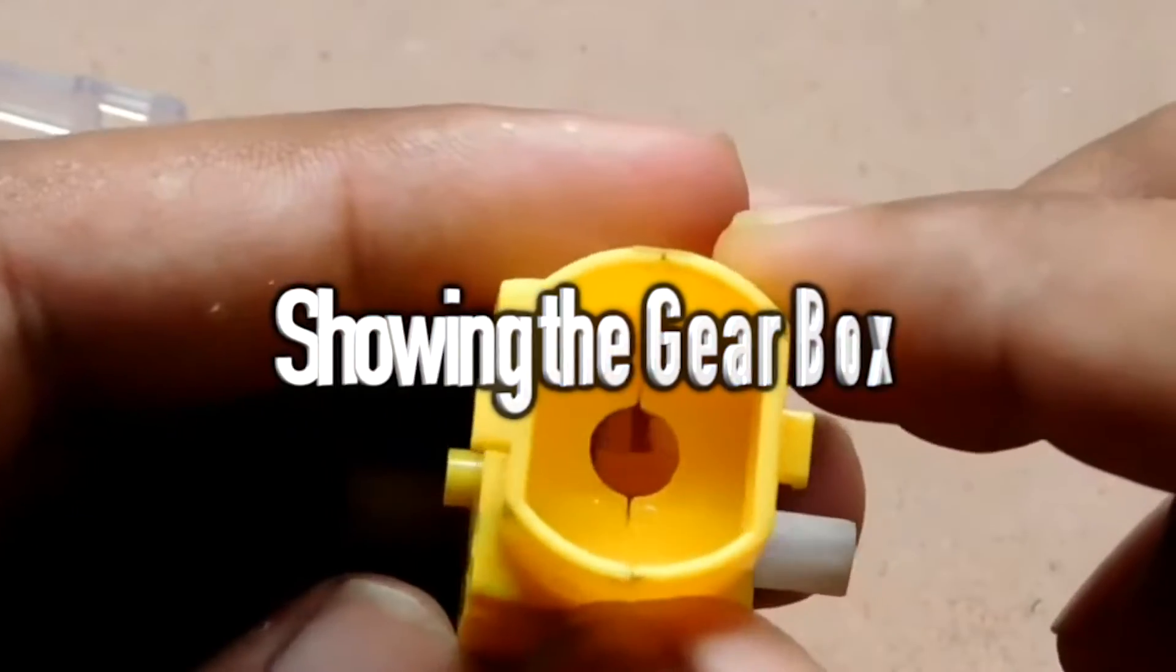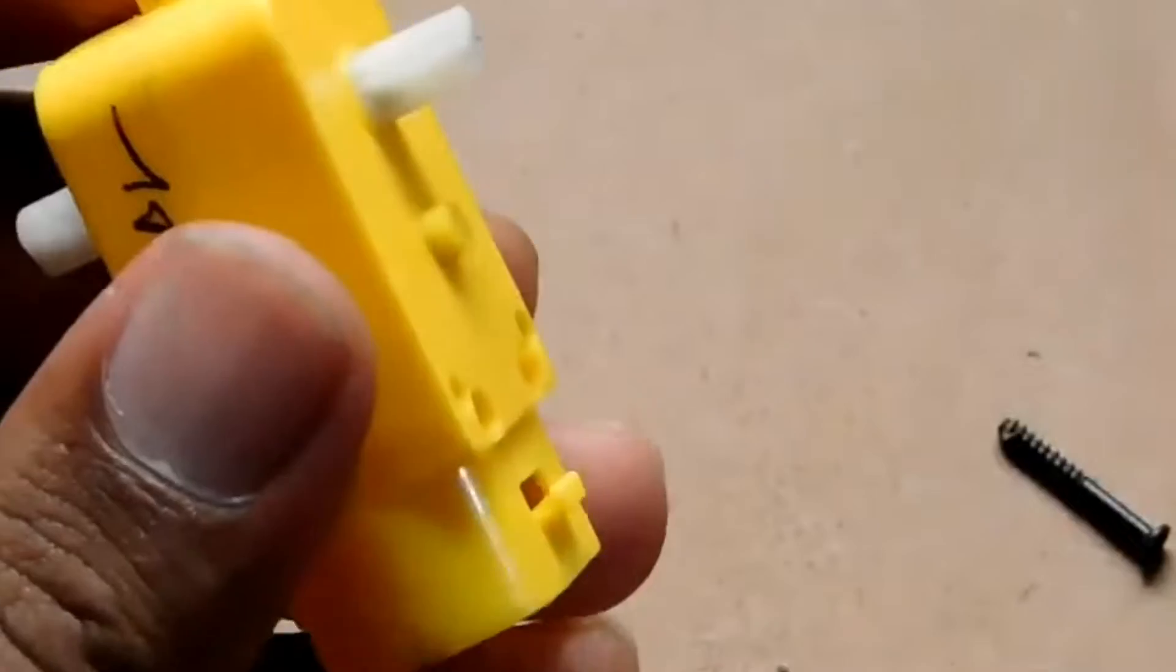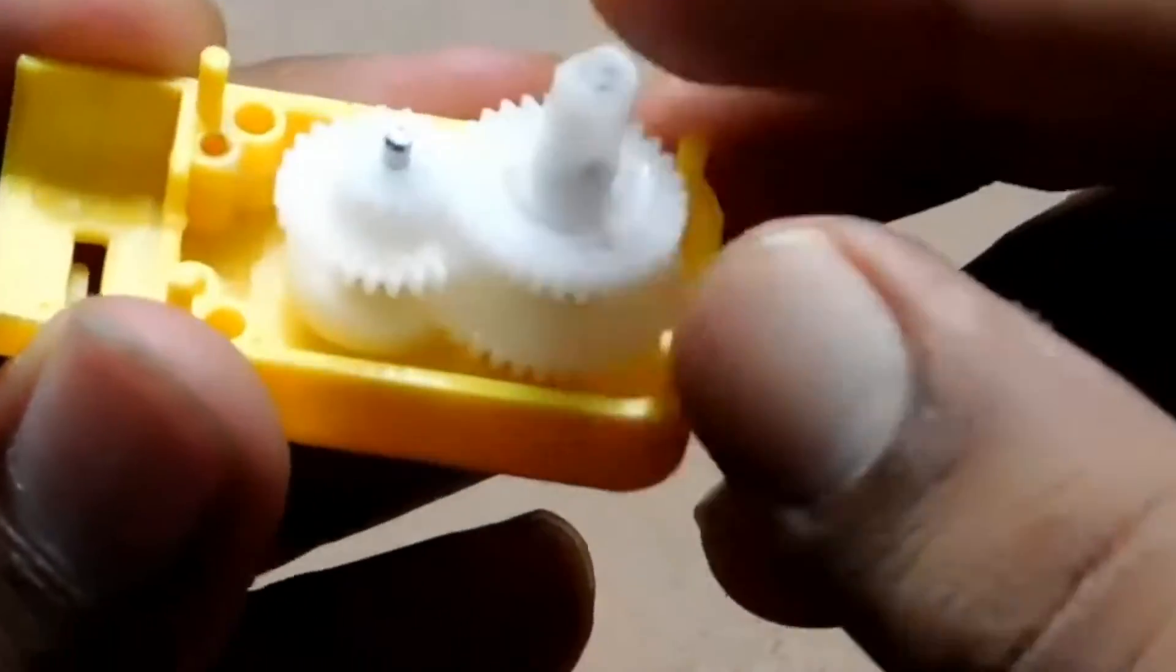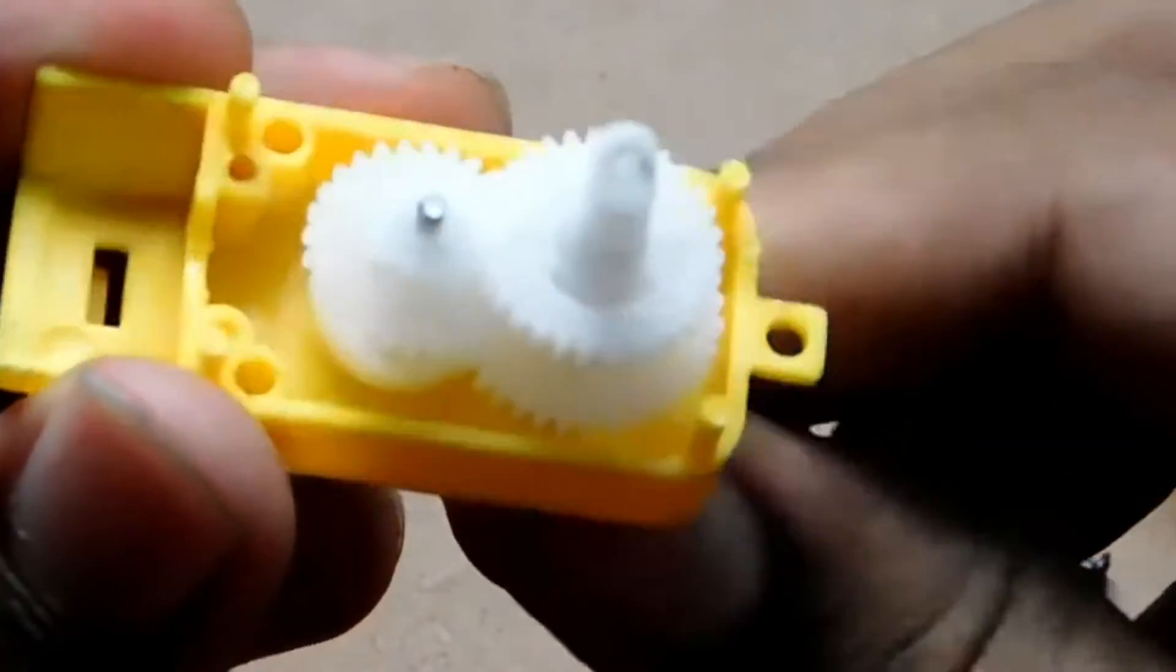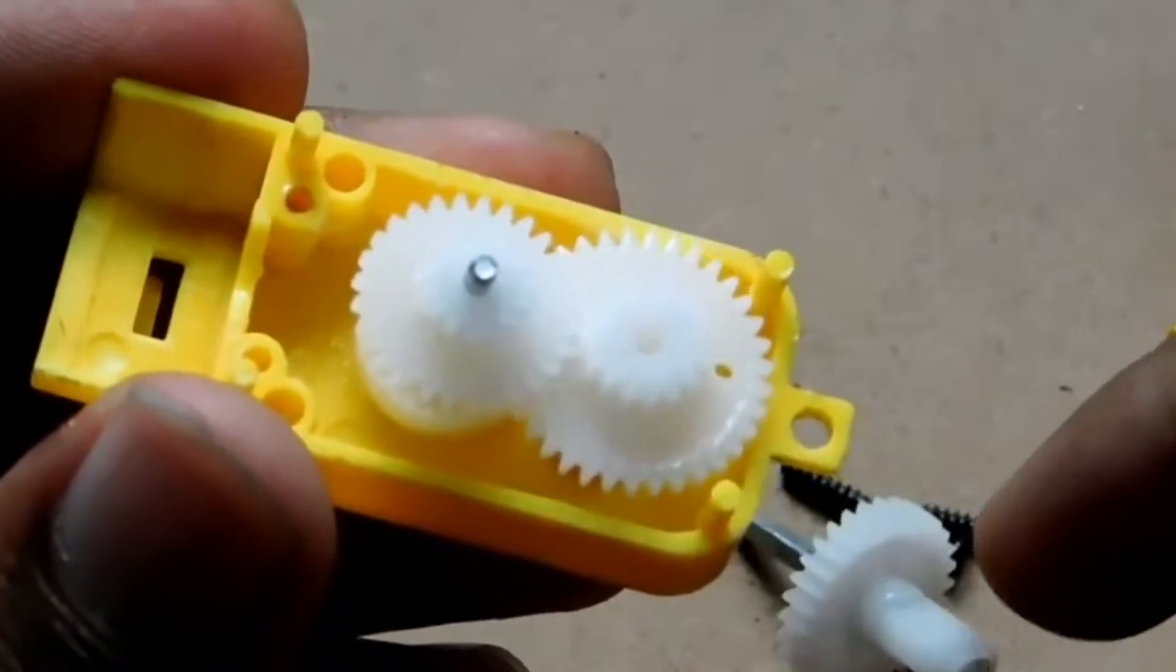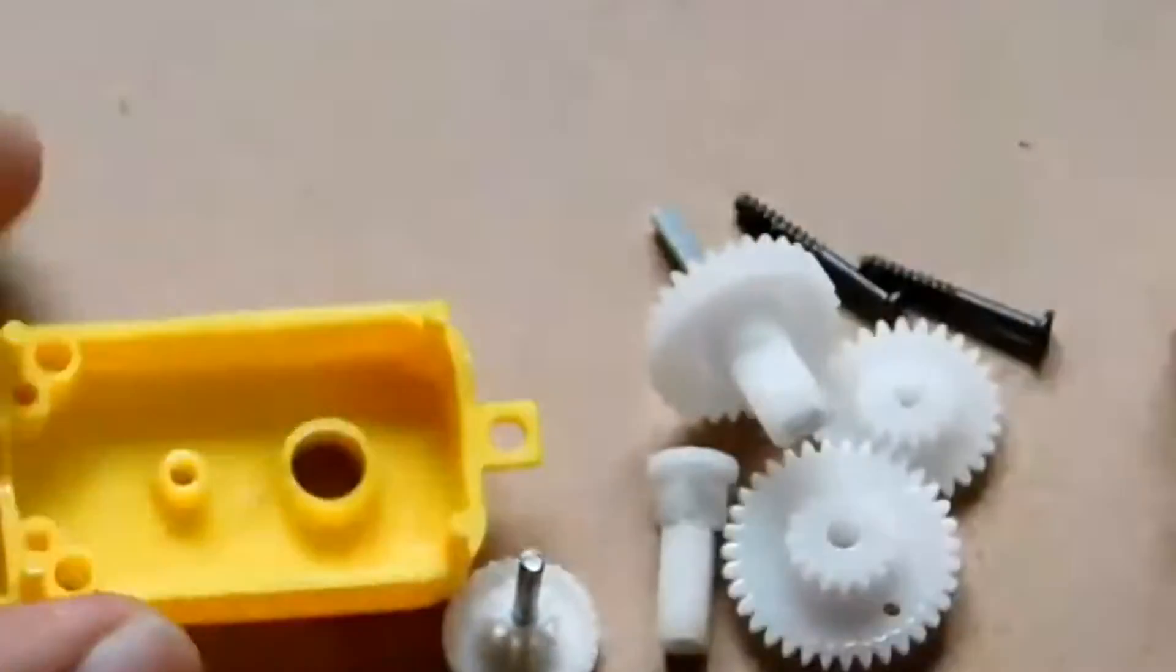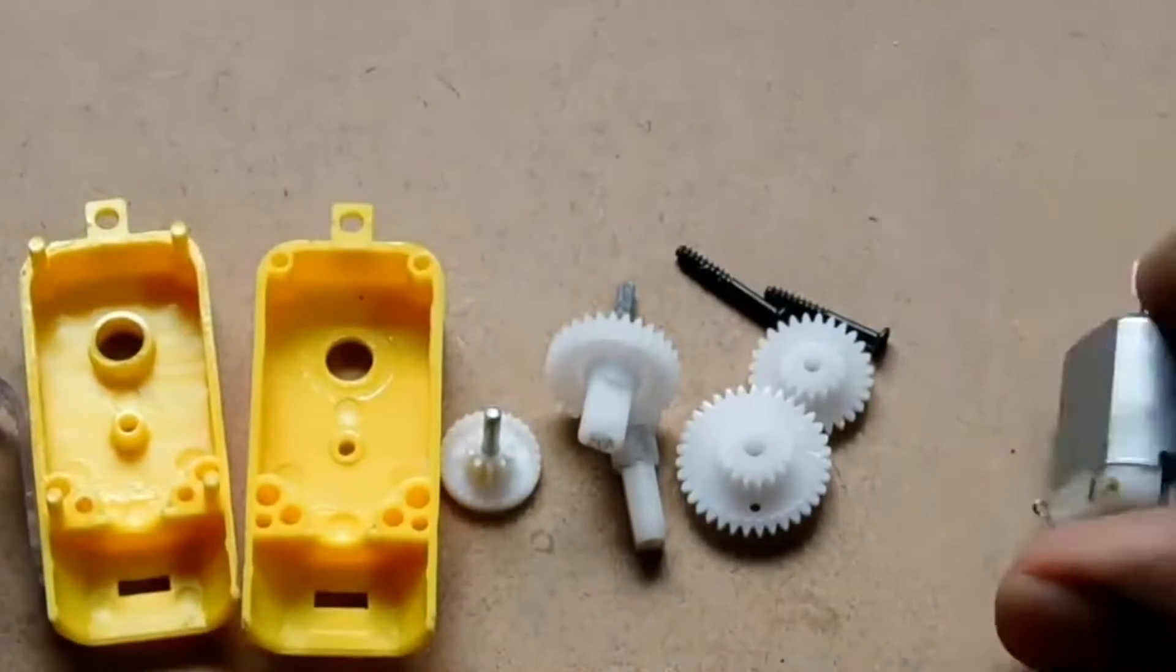We will now open the gearbox to show you how the gears look like inside. As you can see, there are four sets of gears that run in opposing directions, one clockwise and the other counterclockwise. We have just disassembled the gearbox to show you its individual components, how big and small are the gears inside that box.